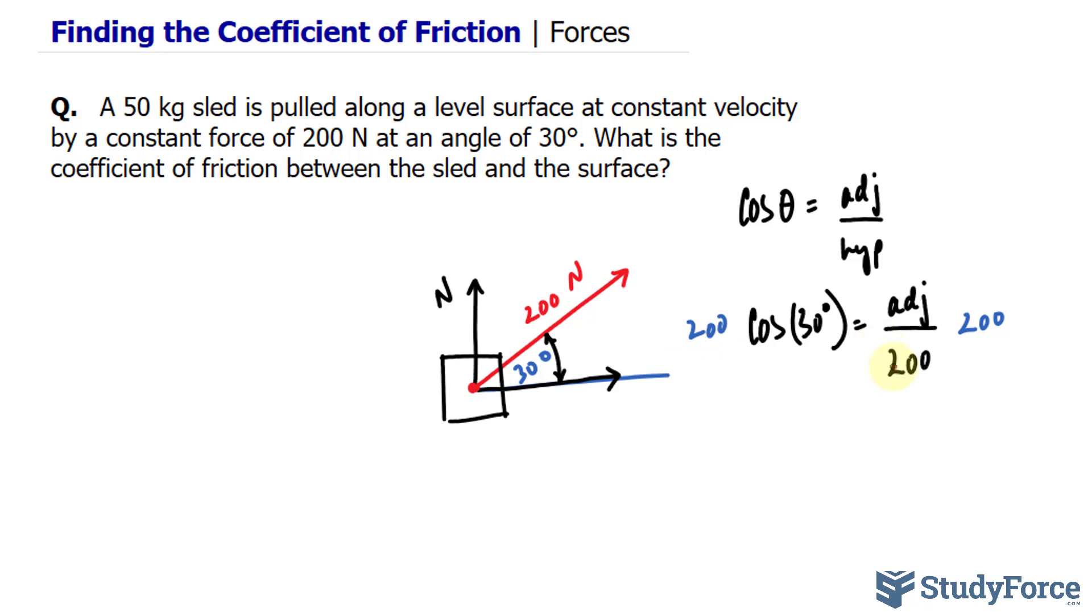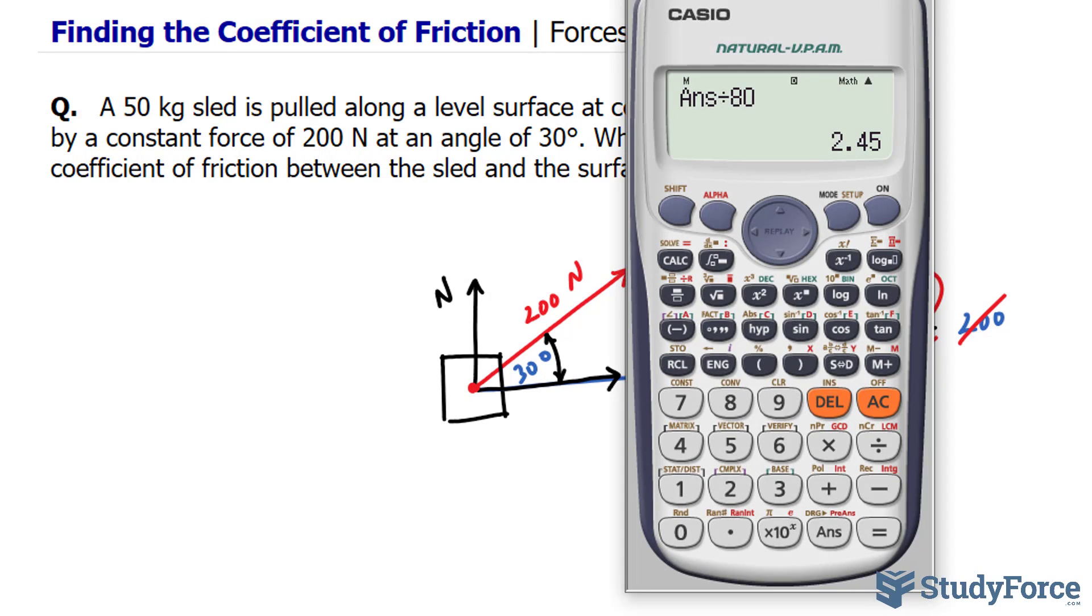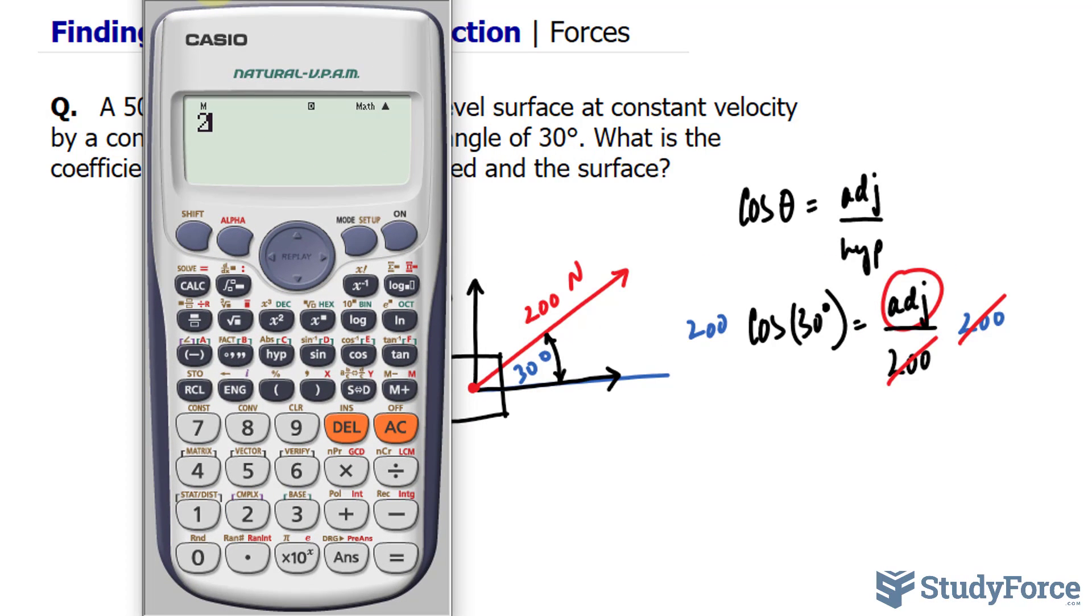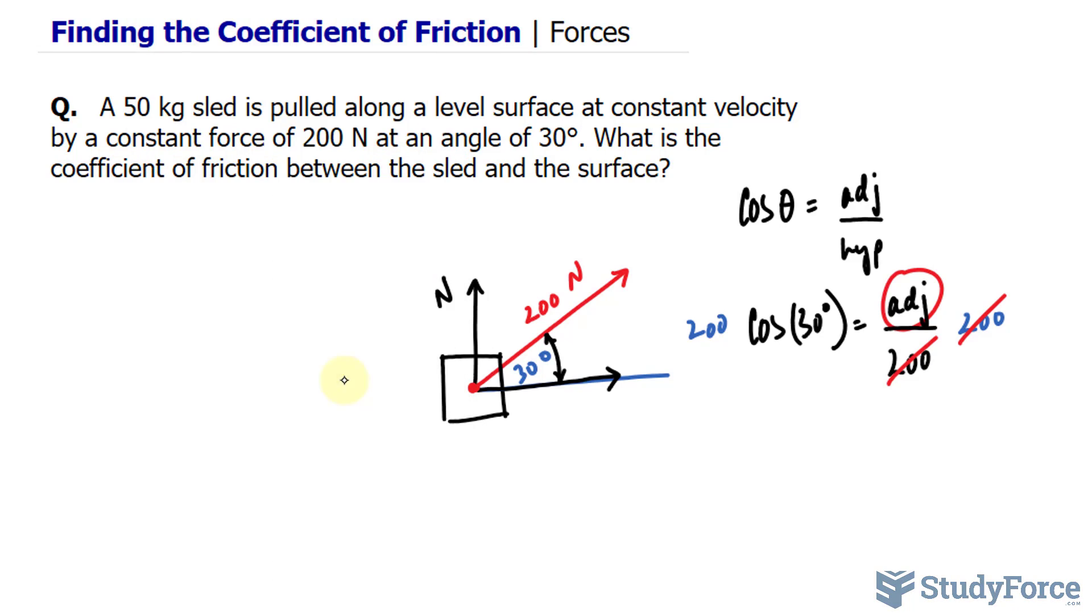What happens is this and this cancel out, and we get our adjacent, which will represent the horizontal force. So I'll take 200 and make sure your calculator is set to degrees. We multiply this by cosine of 30, and we get 173.2 newtons. That's the force pulled horizontally.